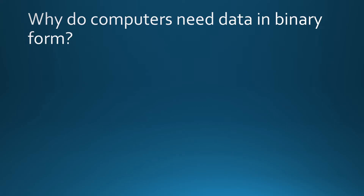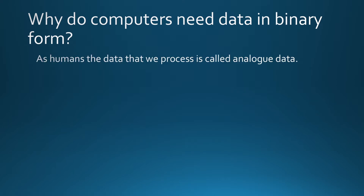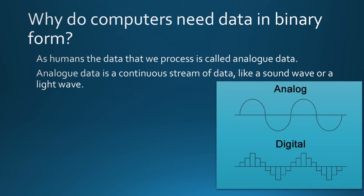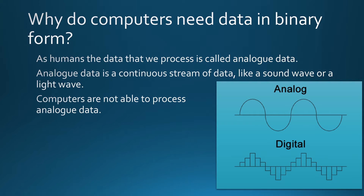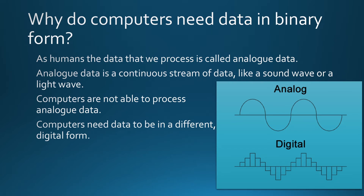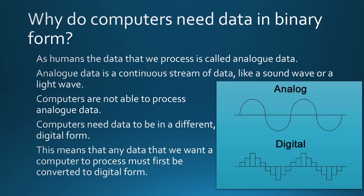So why do computers need data in binary form? We as humans process data continuously — it's known as analog, like a wave, a light wave, a sound wave. After thousands of years of evolution, we're continuously taking that data in and processing it. Unfortunately, a computer just can't do that. What a computer has to do is convert it to a digital form. For example, with a sound wave, it has to listen, record the value, listen again, record the value — and the more times it can record, the more accurately it will reflect the analog version of what we can hear. So for all that to happen, it has to convert the analog into digital.